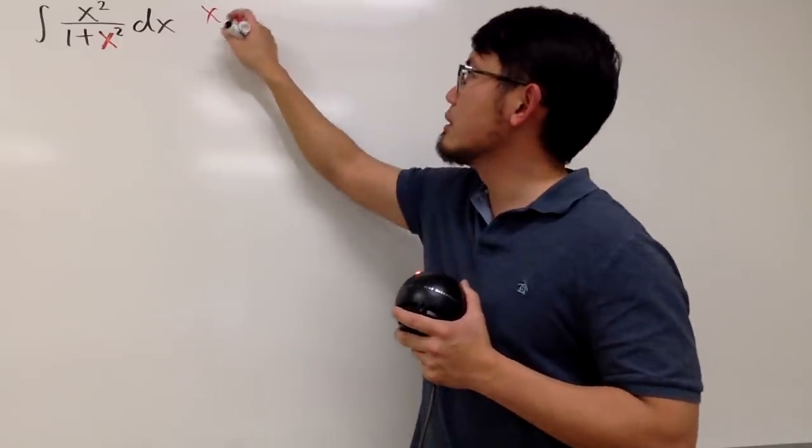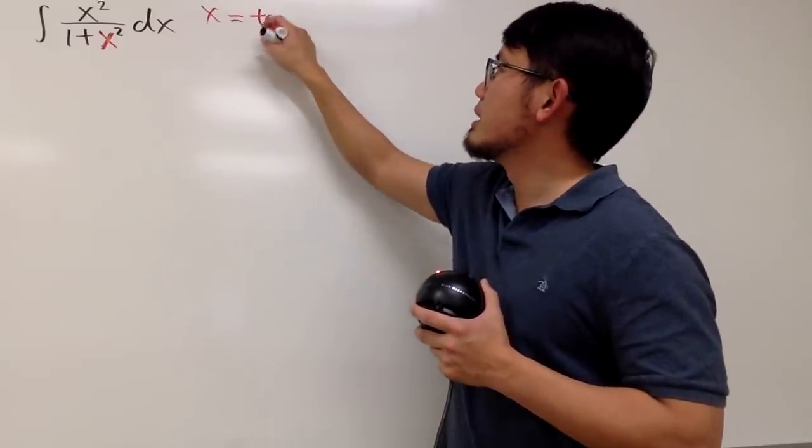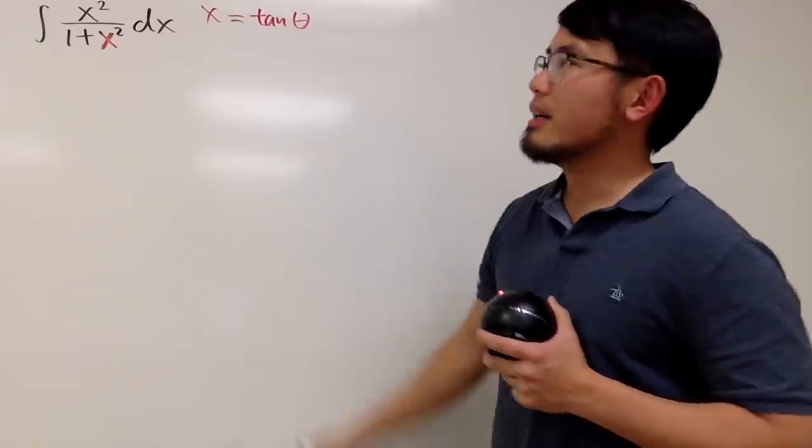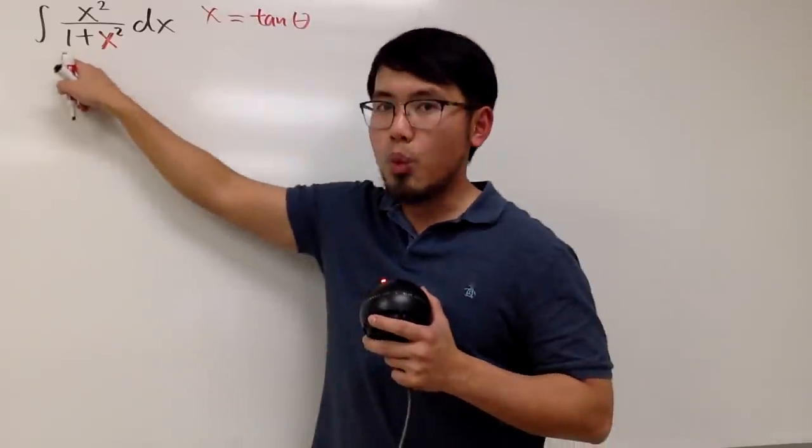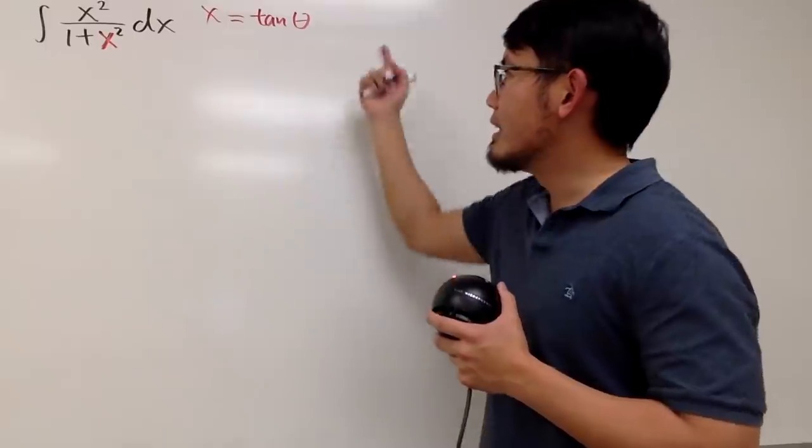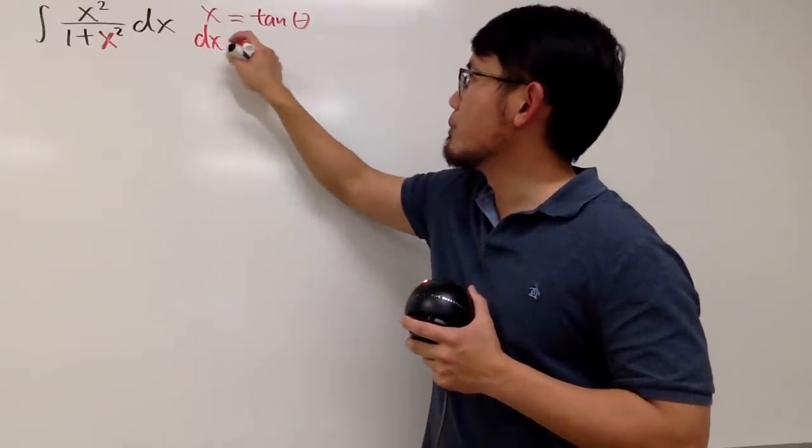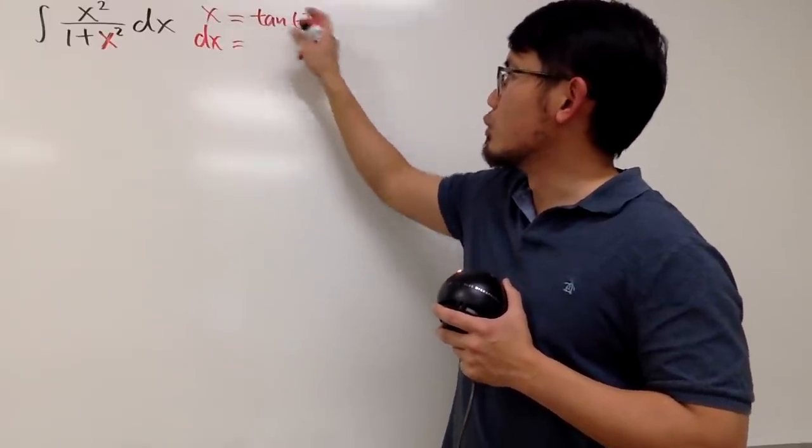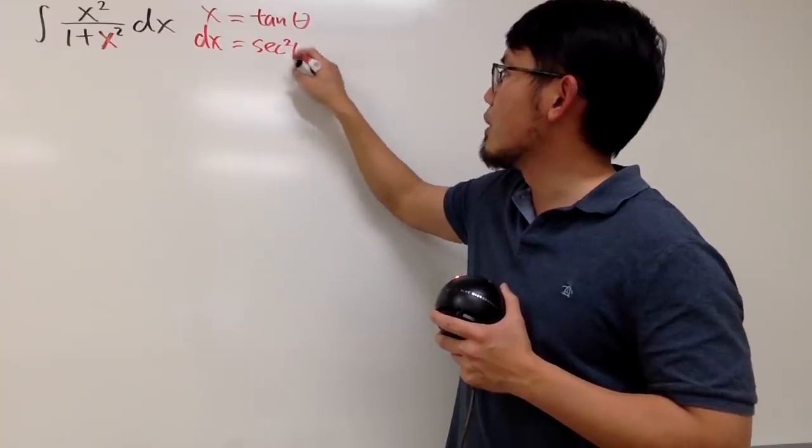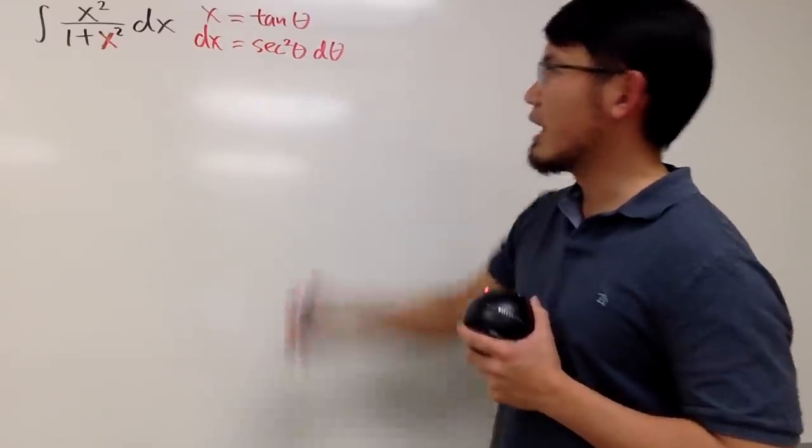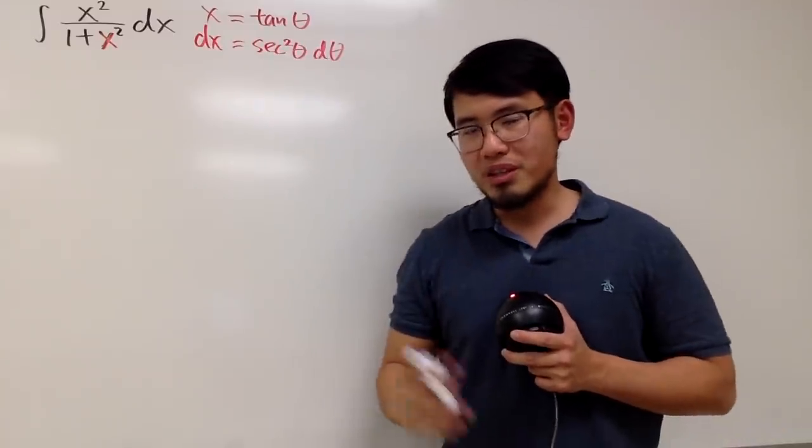Let x equal to tangent theta. And I just need a 1 because this is a 1, namely 1 squared. And then from here, we just differentiate both sides. dx will be the derivative of this, which is secant squared theta d theta. And now we are ready to go to the theta world.